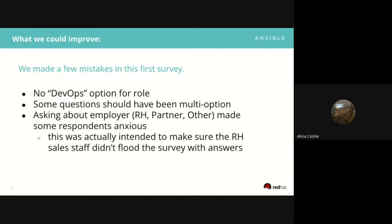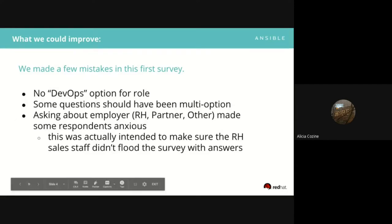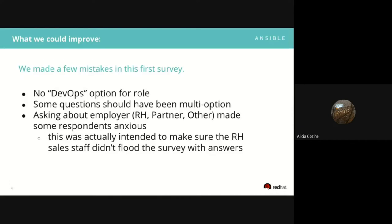We did make some mistakes. When we asked people about their role, we made two mistakes: we didn't allow people to pick more than one option, so we got a lot of people picking 'other' saying they couldn't boil it down to just one thing. We also didn't add DevOps as an option, which a lot of people asked for — apparently many respondents felt it was an easy way to describe what they did. We'll add that for next time.